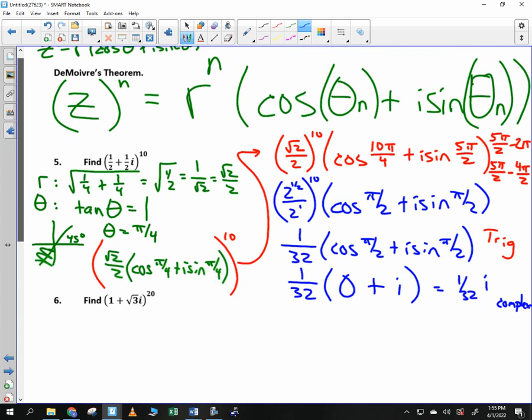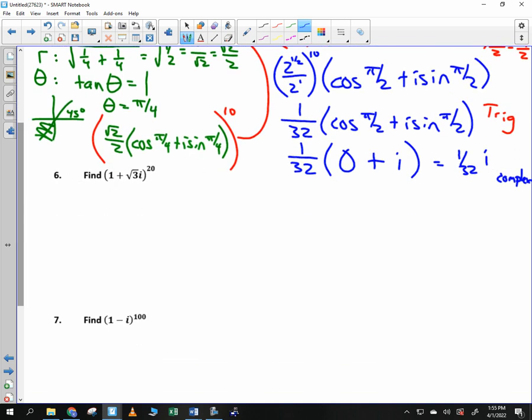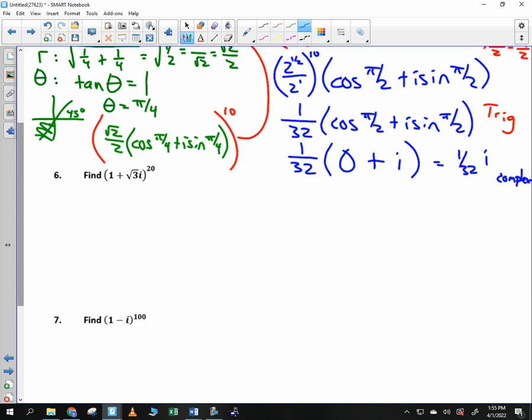So what we just did is, using De Moivre's theorem, we took this thing to the tenth power. Now some of you guys might be like, well, I could have tried multiplying that by ten times. Sure, go ahead. See if you can get everything to cancel and come out with just one over thirty-two i. In this situation, even more ridiculous to go to the hundredth power. What do you got, Gab? Okay, all right, good. Good call. Alyssa doesn't believe you. She doesn't believe you. All right.